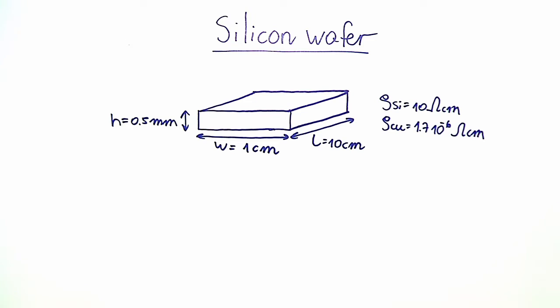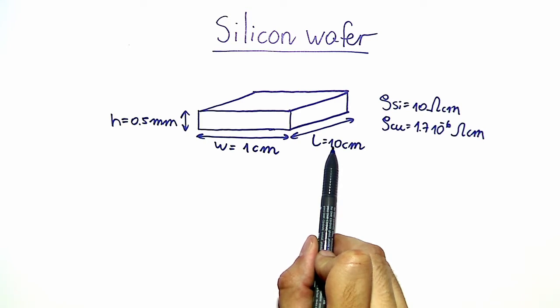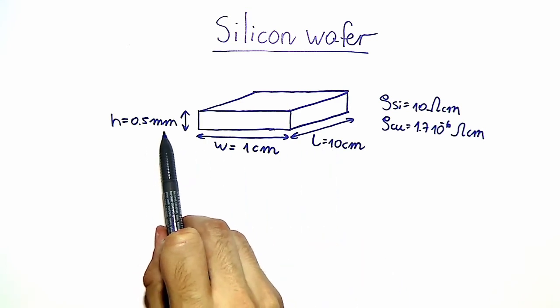The geometry of the problem is sketched in this picture here. We are considering a bar of width 1 cm, length 10 cm, and a height of 0.5 mm.